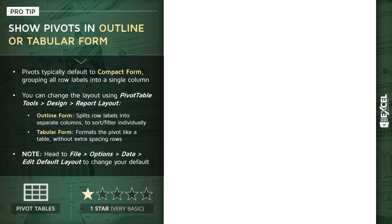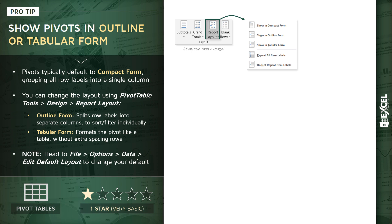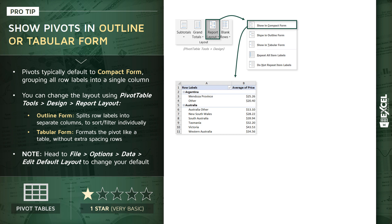Most pivot tables, by default, will show in what's called compact form, and that groups all of your row labels together — or nests them — into a single column. So from your pivot table tools tab, the design group specifically, you'll see a report layout drop-down showing your different table layouts or form options. This is what compact form typically looks like by default.